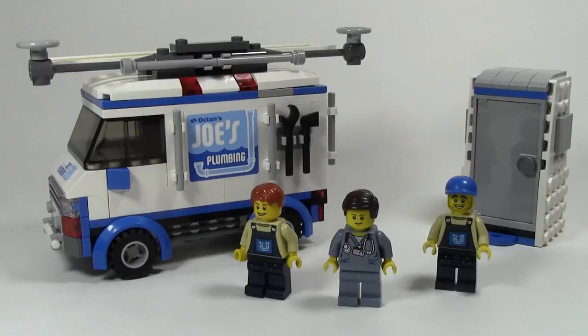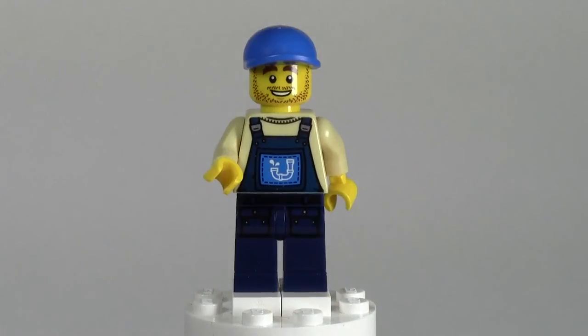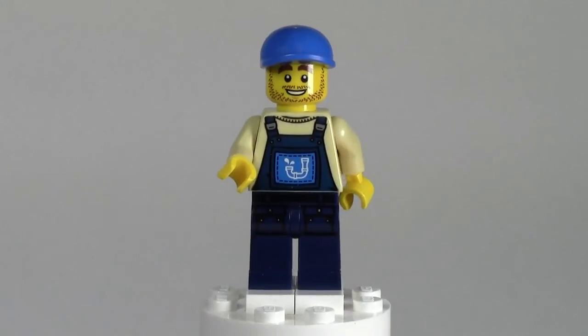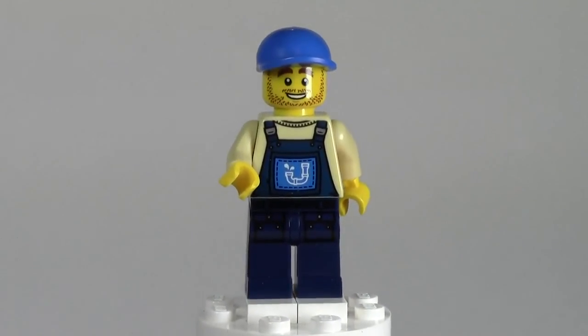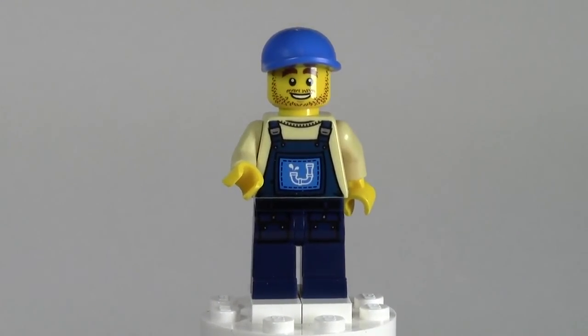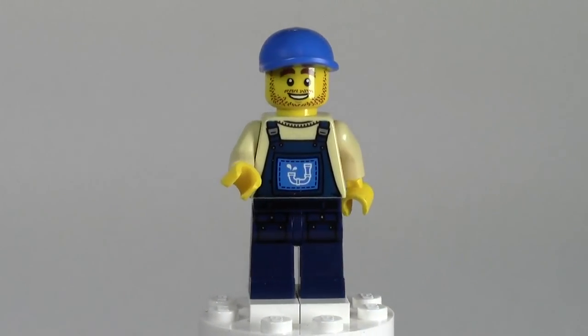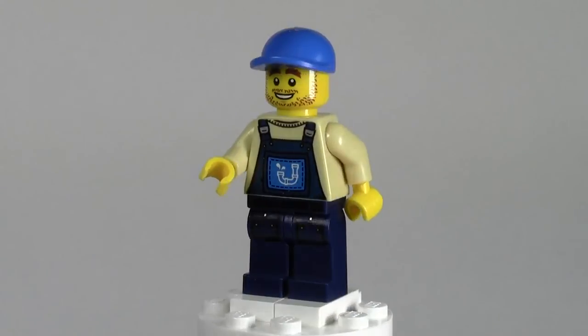Let's take a close-up look of all the minifigures. First minifigure we have here is Plumber Joe. He has the Joe logo on his shirt and I'm guessing he is the owner because his name is Joe, but maybe not, maybe it's just a coincidence. He has coveralls on the shirt here along with like a little neck, so he's wearing a sweater underneath.